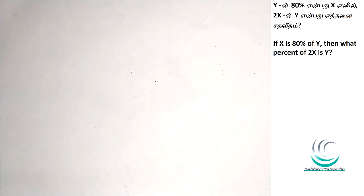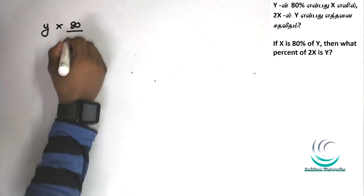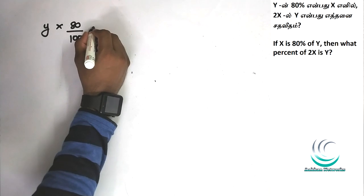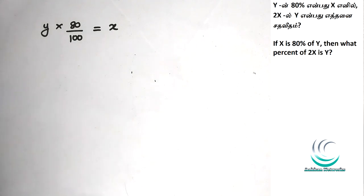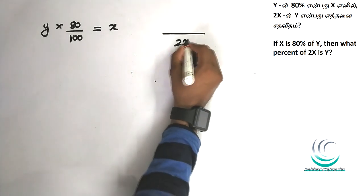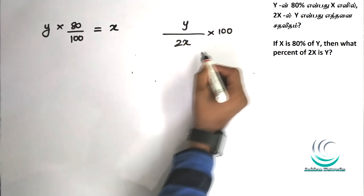Second question: Y is 80% of X, and X is 2x. Given that, Y is 80 by 100 of X. So X is 2x, equal to x. Just give it this equation form. So 2x will equal y into 80 by 100. Create this structure.